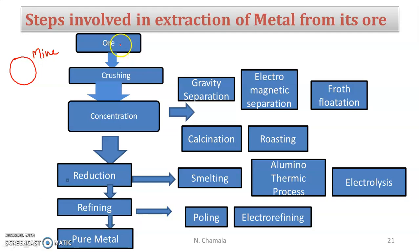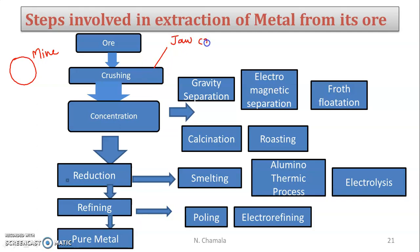The ore from the mine is in the form of big lump stones. We have to crush that into small stone-like size. Using the jaw crusher first, it is sent to the jaw crusher to convert into stone size. After the jaw crusher, it is sent to the stamping mill.